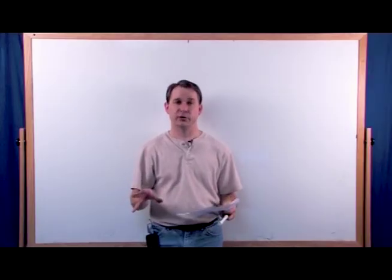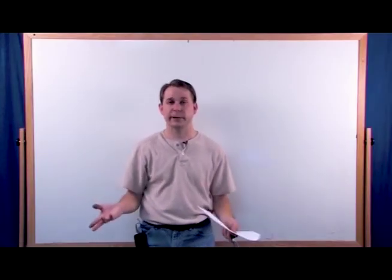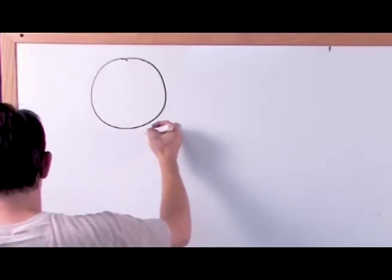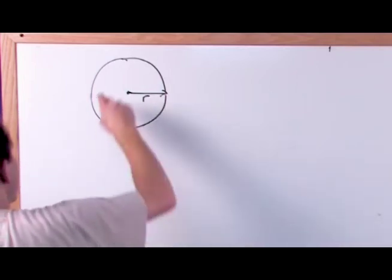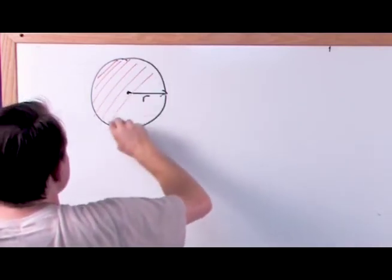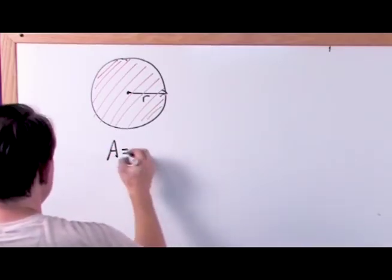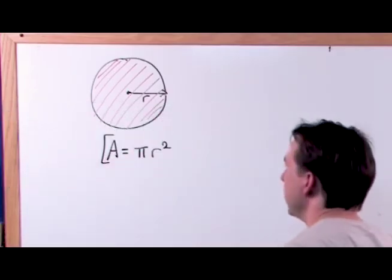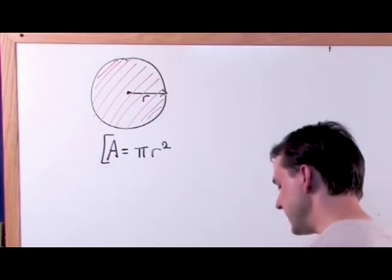Now we're going to talk about the area of the circle. We've talked about the circumference, which is how far around you go. The area is just like the area of triangles and other objects — it's how much paint would it take to paint the circle, how much surface area does it have? Here's a circle with a radius of r. The area of a circle is simply pi times r squared. Pi comes up everywhere. Pi times the radius times the radius again — radius squared — that is the area.